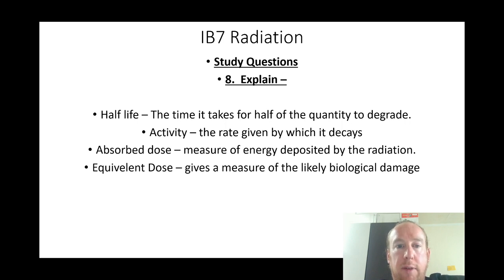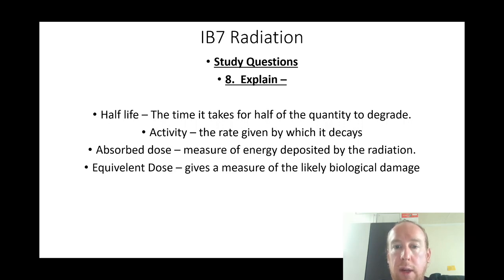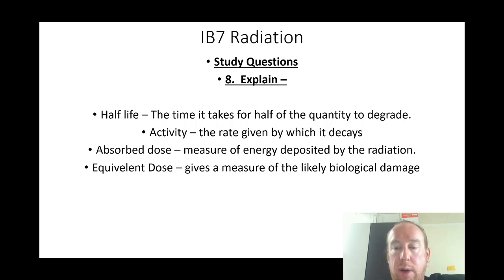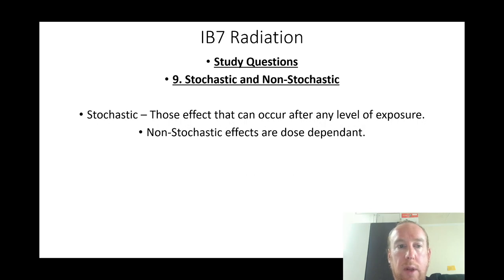Explain half-life: the time it takes for half the quantity to degrade. Activity: the rate at which it decays. Absorbed dose: a measure of energy deposited by radiation. Equivalent dose: gives a measure of the likely biological damage. Stochastic effects: those that can occur after any level of exposure. Non-stochastic effects: dose-dependent effects.